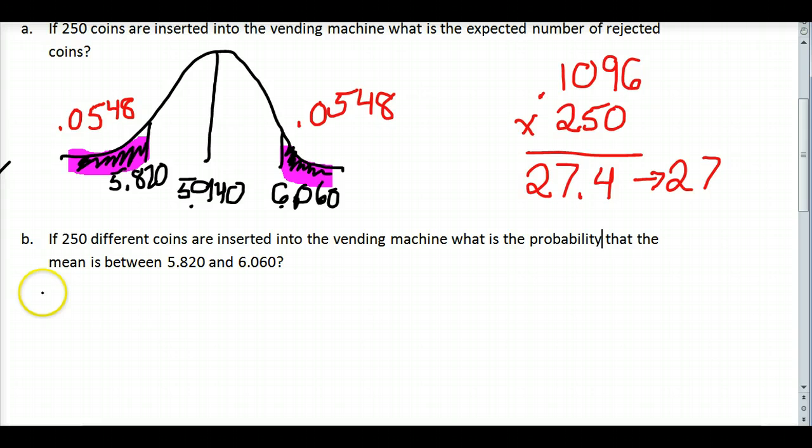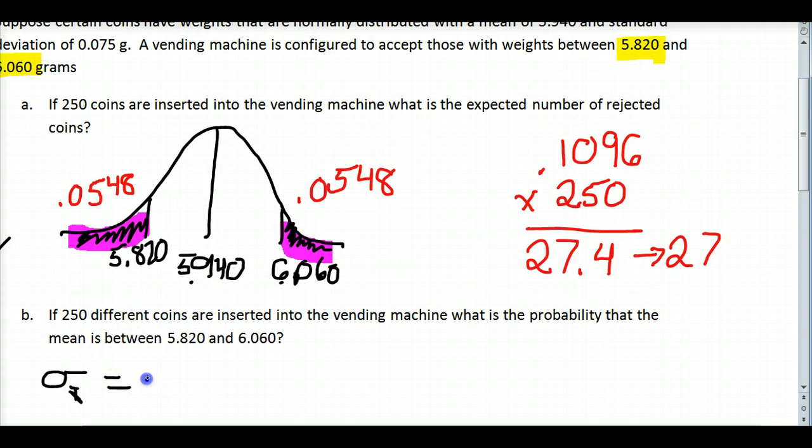We're actually going to do something very similar, except now we have to find a new standard deviation, because this uses what's called the central limit theorem, and it asks us to look at the distribution of the mean, not the individual coins. So to find a new standard deviation, all I'm going to do is take my old standard deviation, 0.075, and divide by the square root of how many coins I have. Now I have 250 coins, making the square root 15.81.